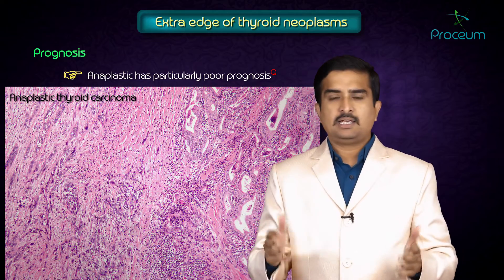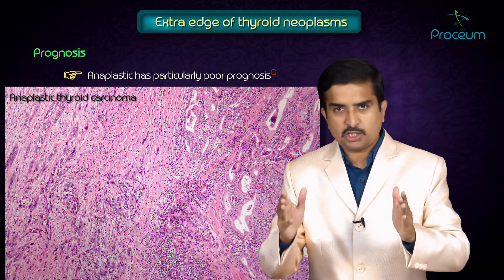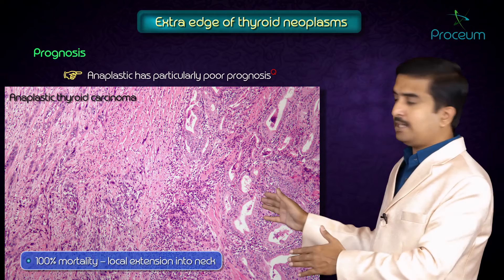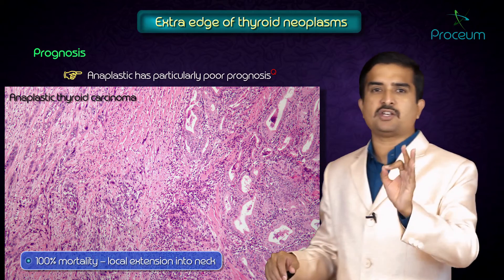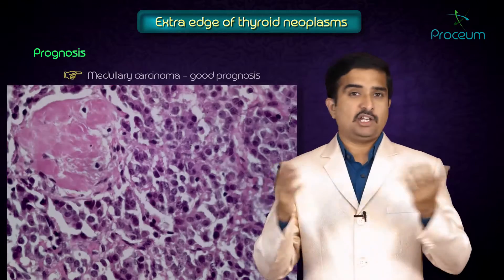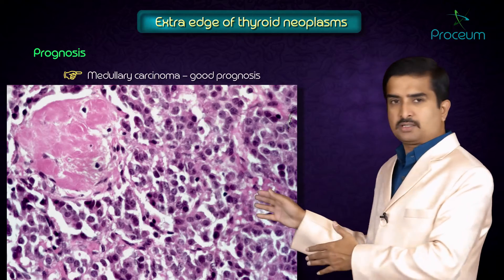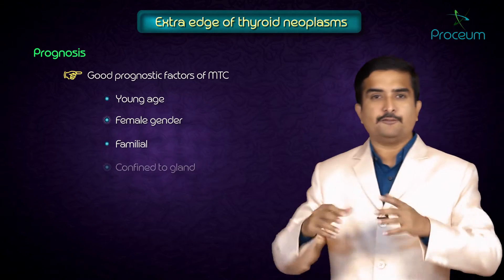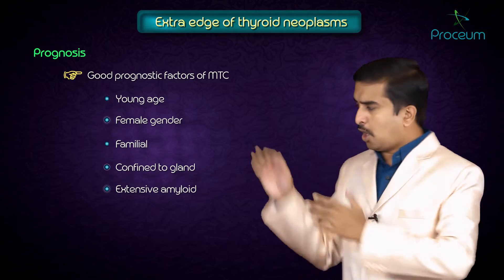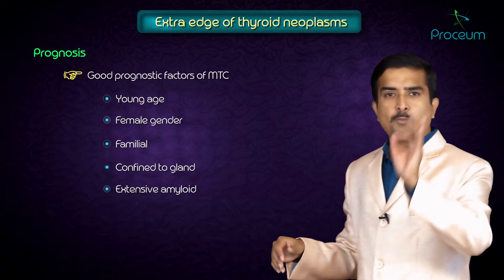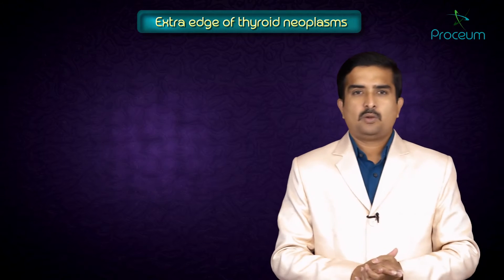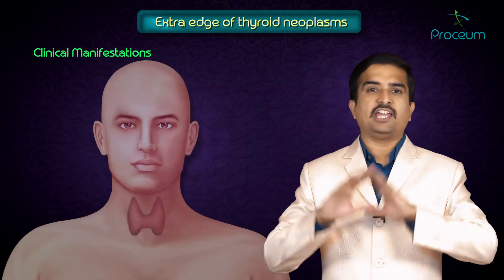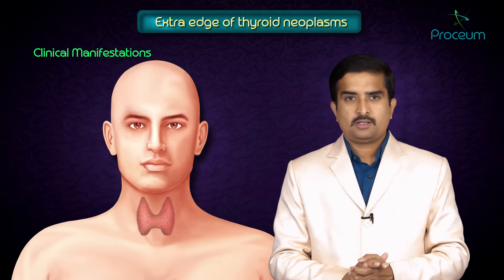Anaplastic carcinoma has a particularly poor prognosis with 100% mortality and local extension into the neck. Medullary carcinoma has a good prognosis, where younger age, female gender, familial type confined to the gland, and extensive amyloid are all considered good prognostic markers.